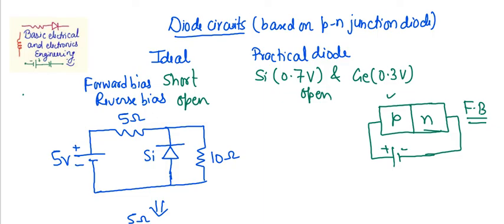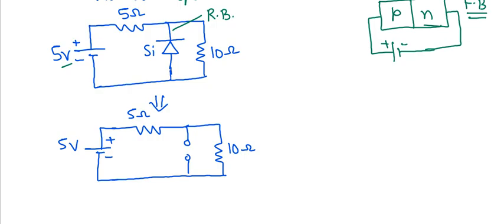Here is one example with a silicon diode, assuming practical conditions with a supply voltage of +5 volts. In this circuit the diode is in reverse bias condition, so it acts as an open circuit and we can remove the diode. We then need to find the current through the resistors or the voltage drop across the 10 ohm resistance, using voltage division.